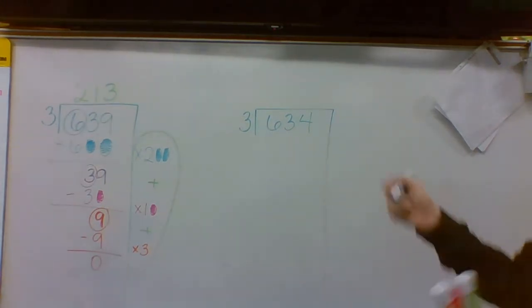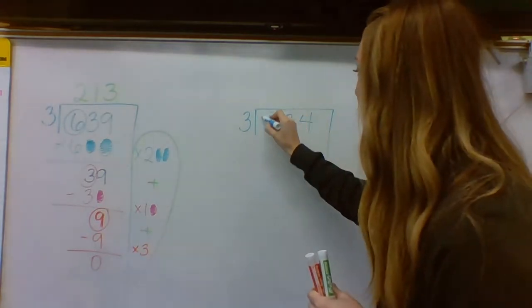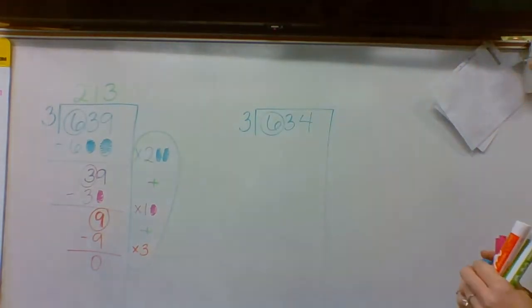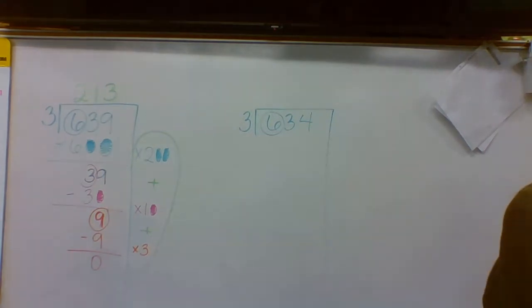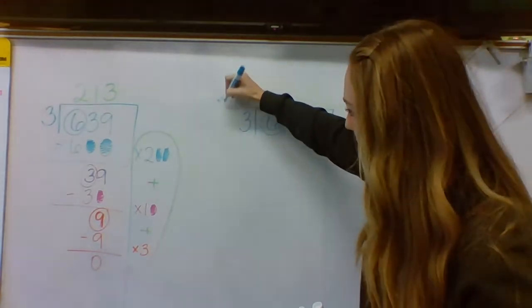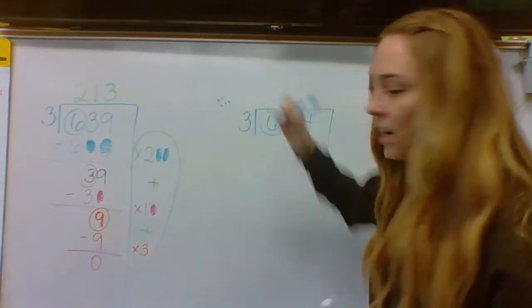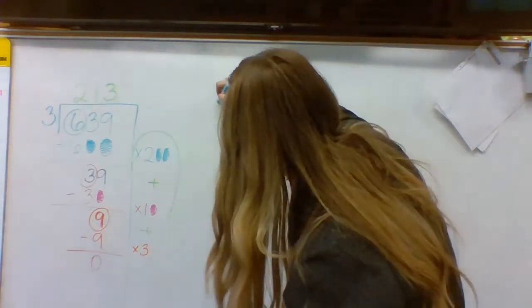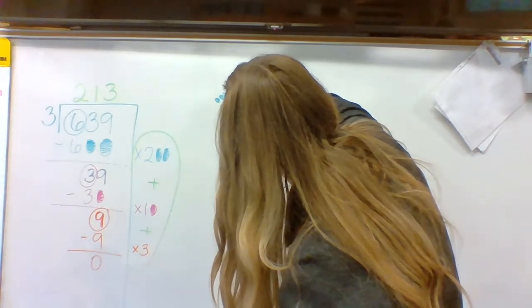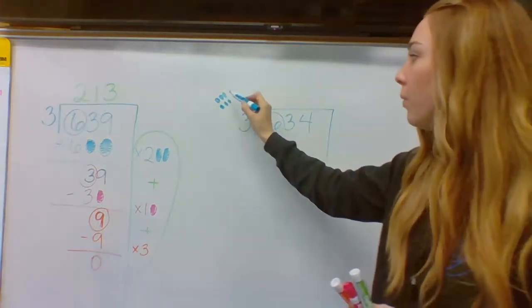I'm still going to get rid of the six first. I know I shouldn't say six. It's 600. I'm just calling it a six for now. How many groups of three fit in six? And I want to show you a trick if this part stumps you. I can easily draw six dots and circle those.